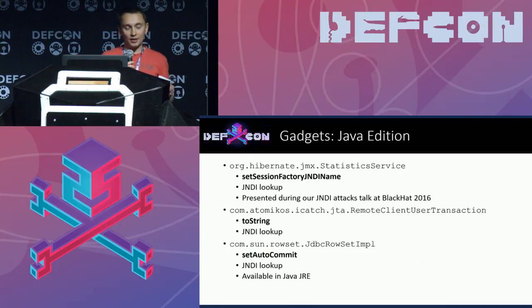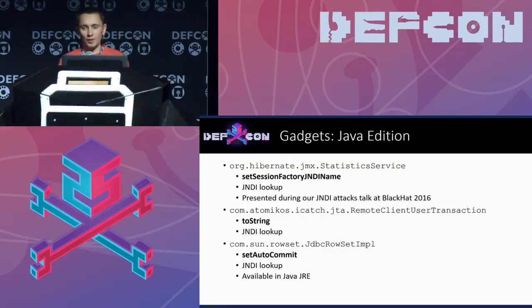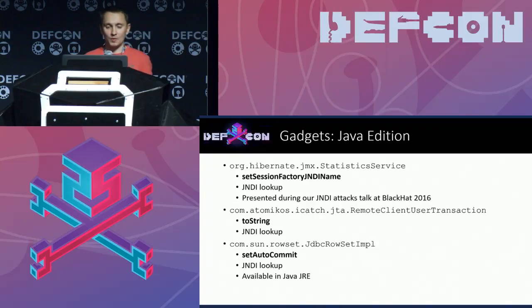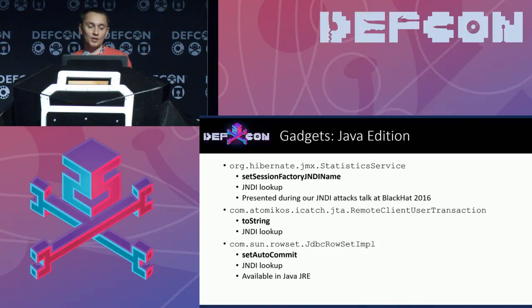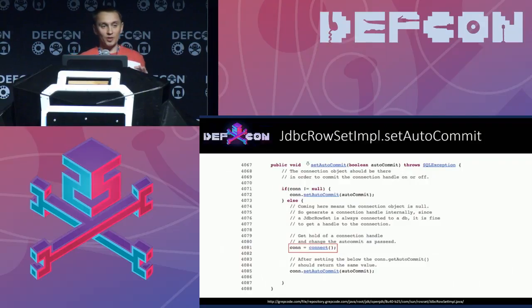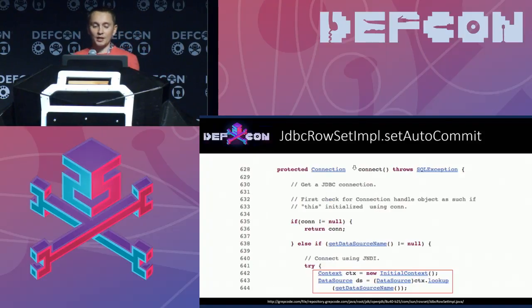Java has its own setter gadget as well. After our last year's research on JNDI injection attacks, we found a few setters with JNDI lookup calls. Oracle recently disabled RMI and CORBA vectors in the default configuration of Java, but the LDAP vector still works. Our gadget sets SessionFactory JNDI name in StatisticsService — we mentioned this in our Black Hat 2016 talk. Similar to it is the toString gadget from RemoteClientUserTransaction class. Finally, the setAutoCommit gadget from the already-known JdbcRowSetImpl class. This class is from the JRE library so doesn't require any external dependencies. The setter calls connect, which calls InitialContext.lookup with our value from the data source name properties — giving us remote code execution.